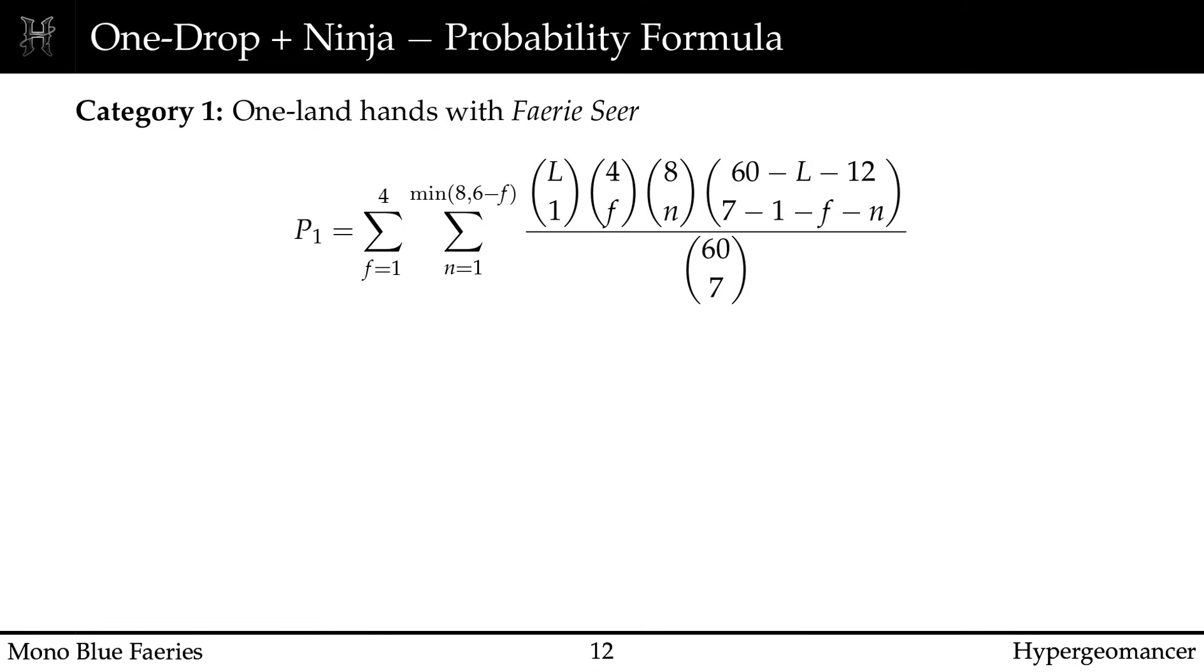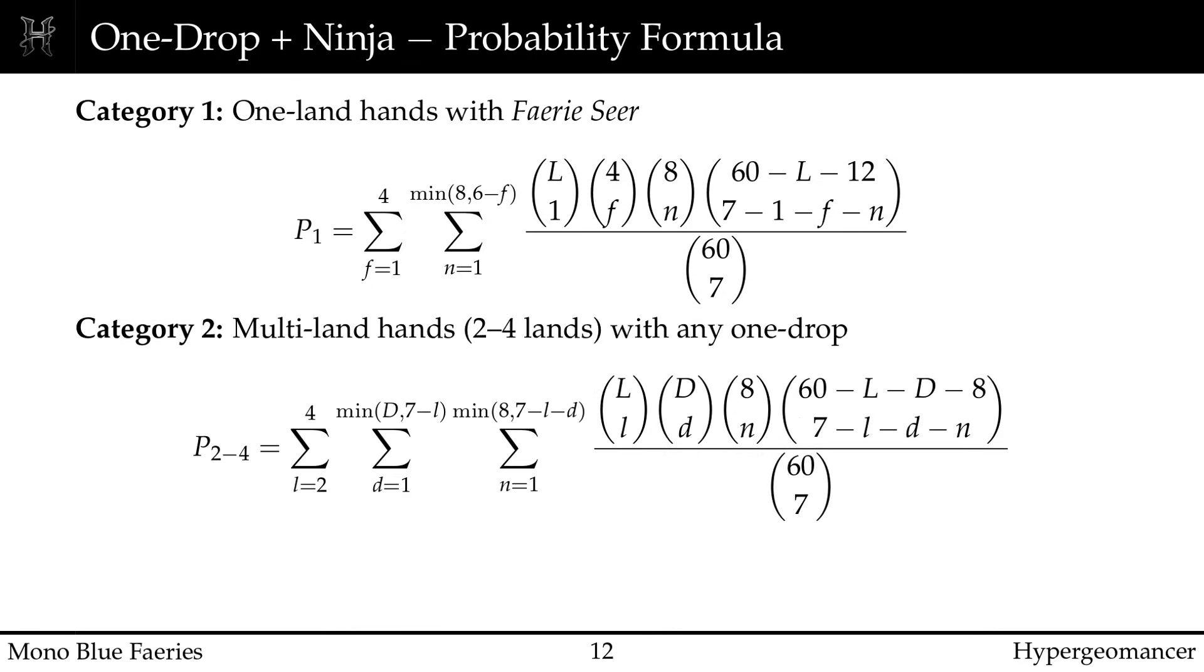Now we get to the heart of the deck's gameplan. Mono Blue Faeries wants to deploy a 1 drop, attack unblocked and bounce it for a ninja, generating both pressure and card advantage. This means that your opening hand needs 2 elements: at least 1 one-drop and at least 1 ninja. We divide keepable hands into 2 categories. Category 1, 1 land hands with Faerie Seer and a ninja, made viable by scry. Category 2, hands with 2-4 lands, any 1 drop and a ninja.